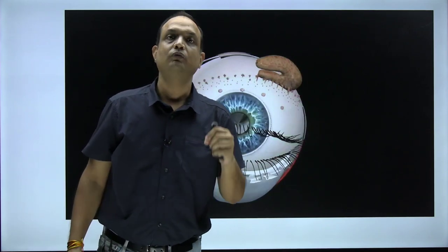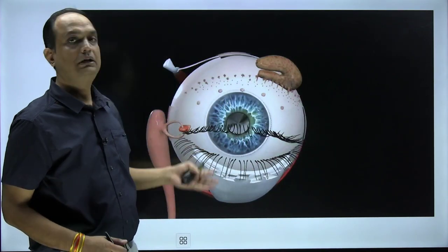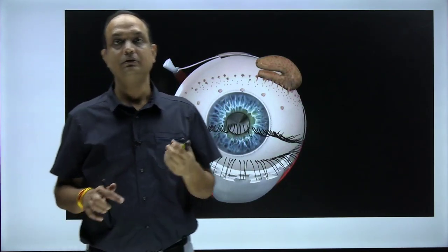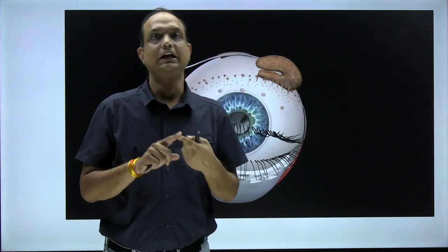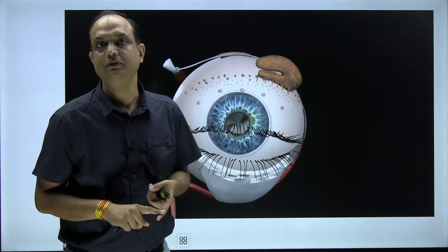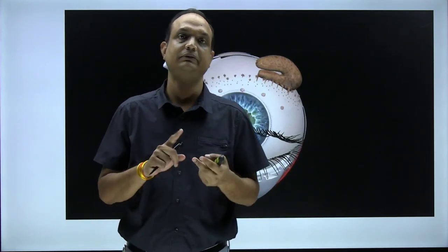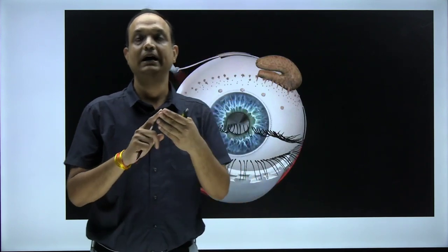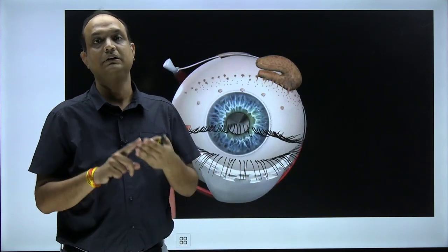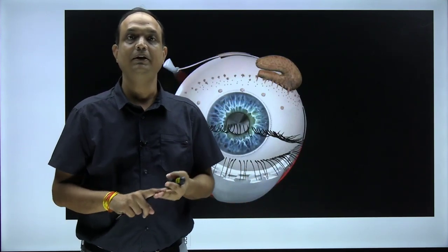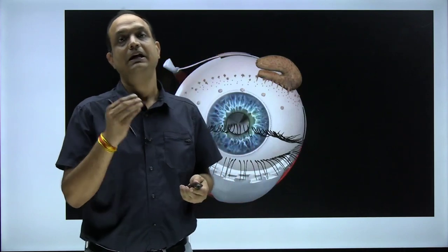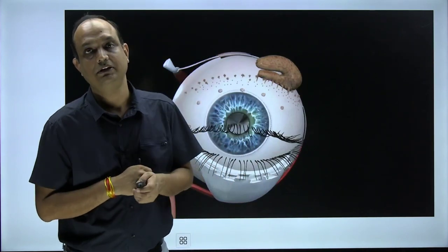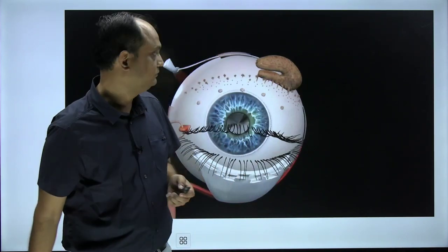To summarize the layers of the eyelid: outermost is the skin, then the superficial fascia, then muscles, then the submuscular layer, behind that the tarsal plate, then the tarsal glands, and finally the conjunctiva.